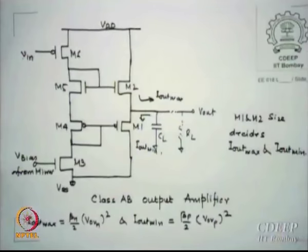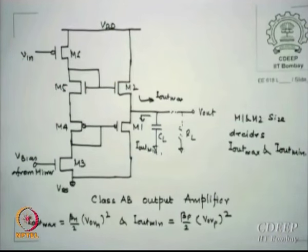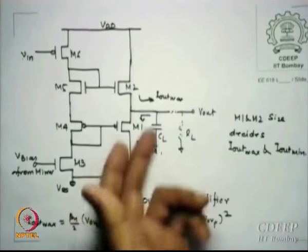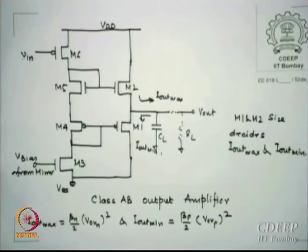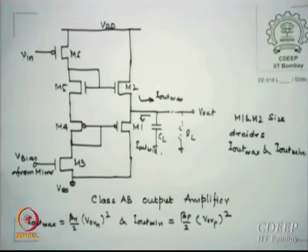Class AB amplifier is always the last stage of any op-amp. First stage is single-ended diffamp, second is gain stage, third is the buffer stage. Buffer gains are not important — what matters is the currents it can provide. Betas should be large enough so that Iout_max and Iout_min are sufficient to charge and discharge the given capacitor in the required time.